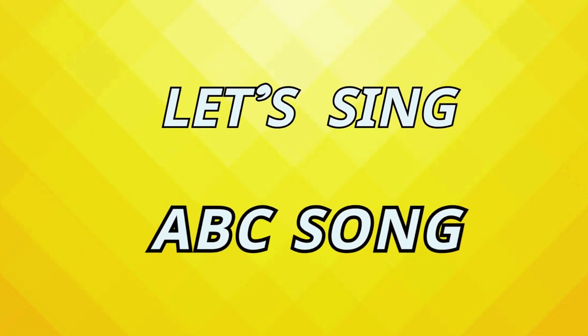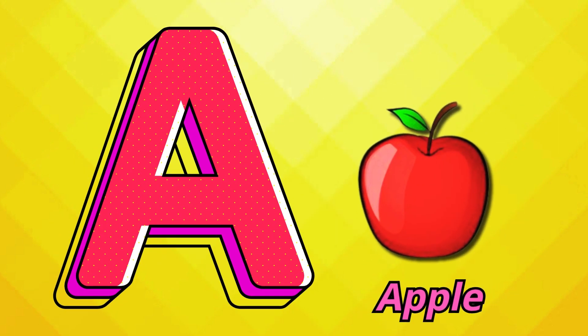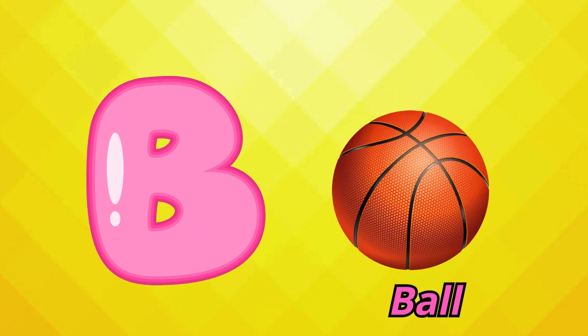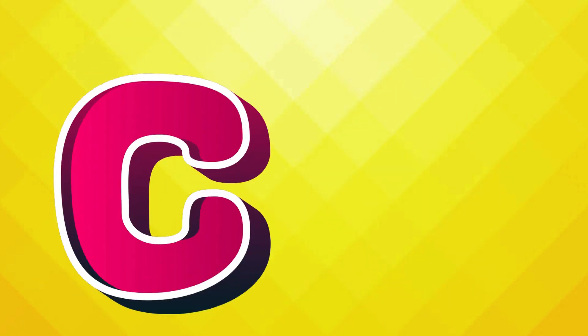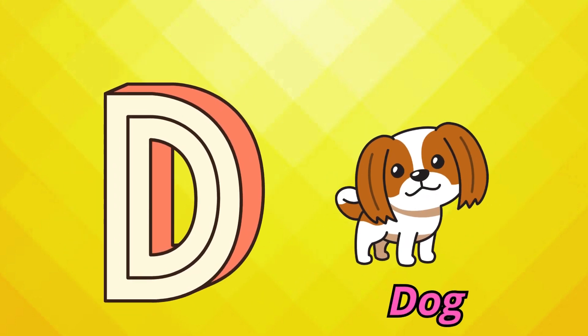Dum-dee-da-dum-dum-dum. A is for apple, a-a-apple. B is for ball, b-b-ball. C is for cat, c-c-cat. D is for dog, d-d-dog.